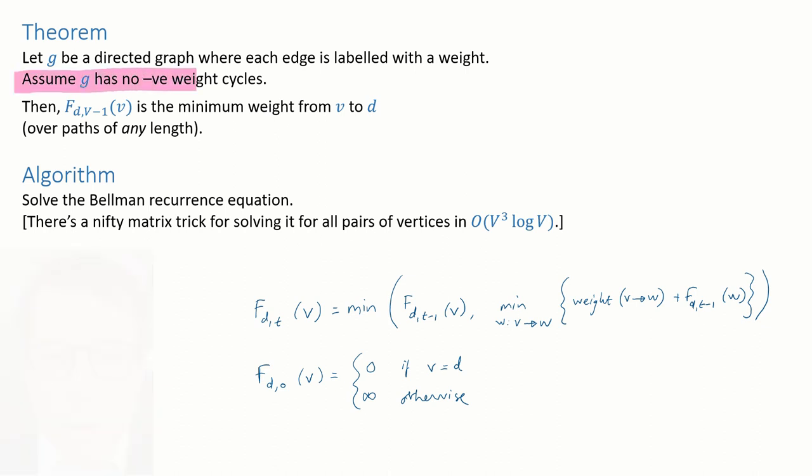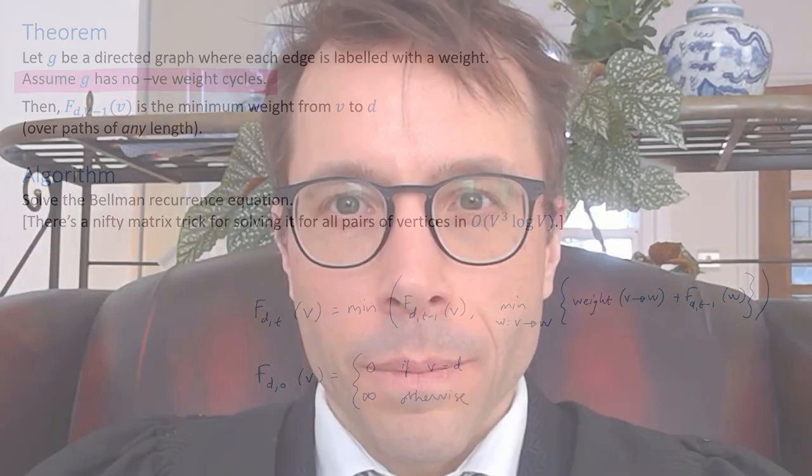Now, this theorem has a restriction. It requires that the graph shouldn't have any negative weight cycles. We've come across the problem of negative weight cycles before. We know, of course, if there are negative weight cycles, then some minimum weights will be equal to minus infinity. Now, we could, if we like, augment our algorithm here along the lines of Bellman-Ford to detect whether or not there are negative weight cycles. And if we worked even harder, we could figure out the cases where it's appropriate to return minus infinity. But all of that's left as an exercise for the viewer.